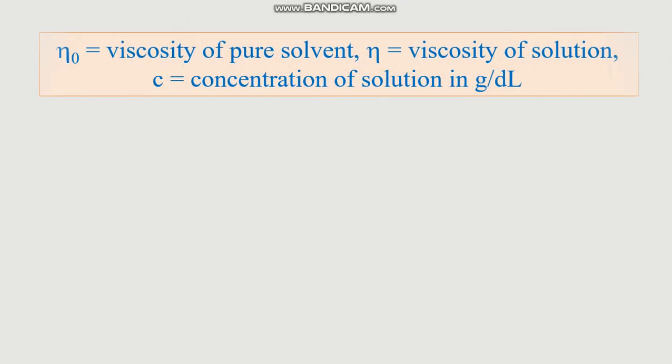Now if you take a pure solvent and add some solute to make a solution, then both of them would have different viscosity coefficients. Suppose the viscosity coefficient of the pure solvent is eta-zero and the viscosity coefficient of the solution is eta, where the concentration of the solution is C gram per deciliter — that means C grams of solute dissolved in 100 milliliter of solution.